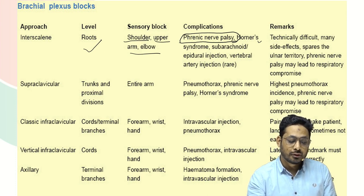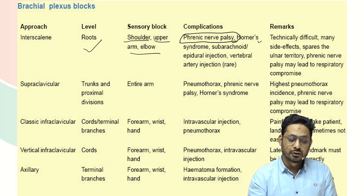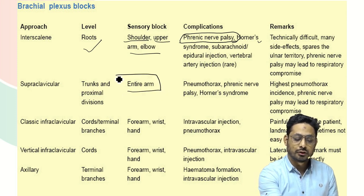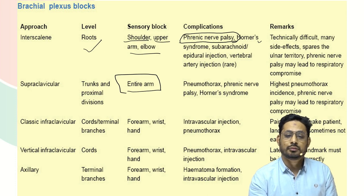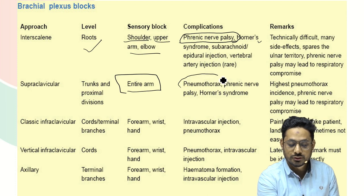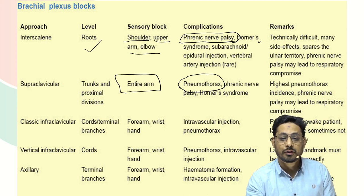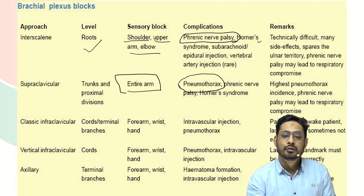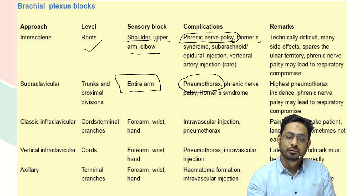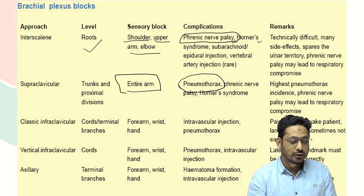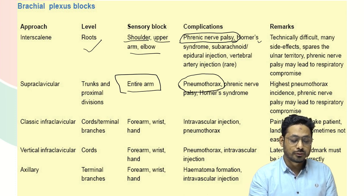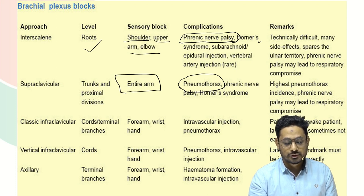The second block is supraclavicular block, which blocks the trunk and the proximal divisions. It is used for the entire arm. The complication that we should always remember is pneumothorax, which has the highest incidence with supraclavicular block. So phrenic nerve palsy is due to interscalene block, and pneumothorax is due to supraclavicular block. Phrenic nerve palsy and Horner syndrome can also occur with supraclavicular block, but the most common complication is pneumothorax. Next is infraclavicular block, given at the level of cords and terminal branches — pneumothorax can also occur here, but it is less common than with supraclavicular block.